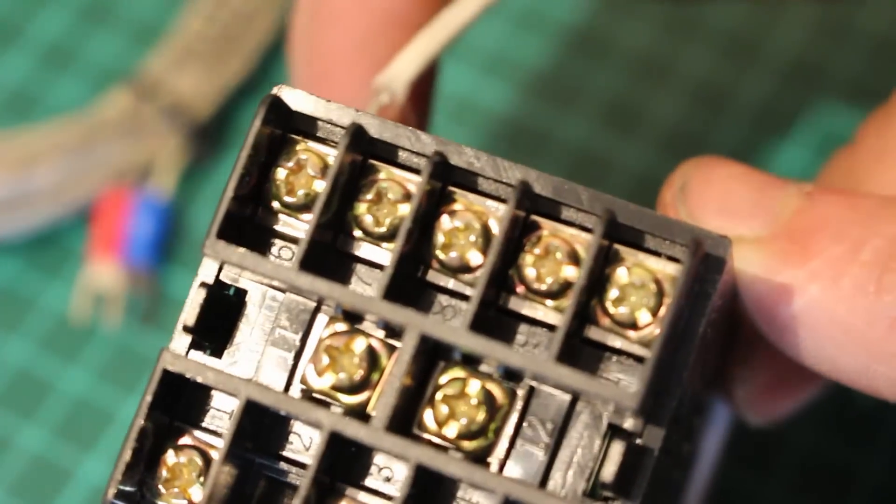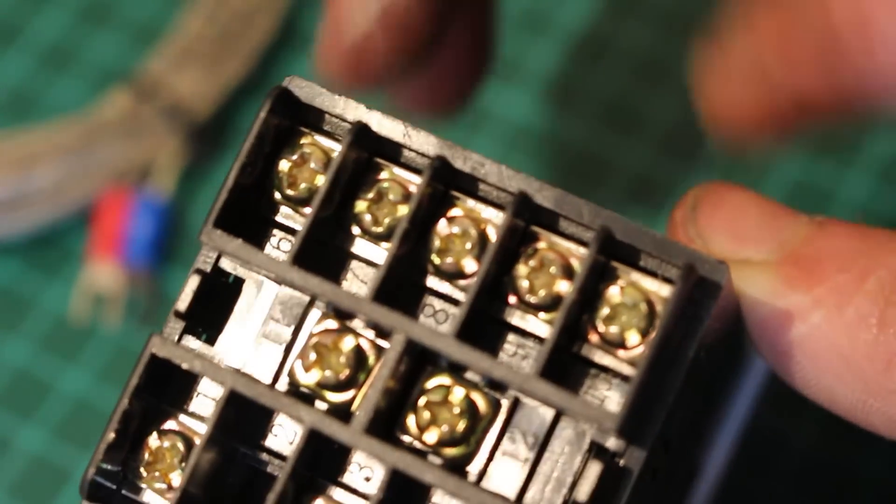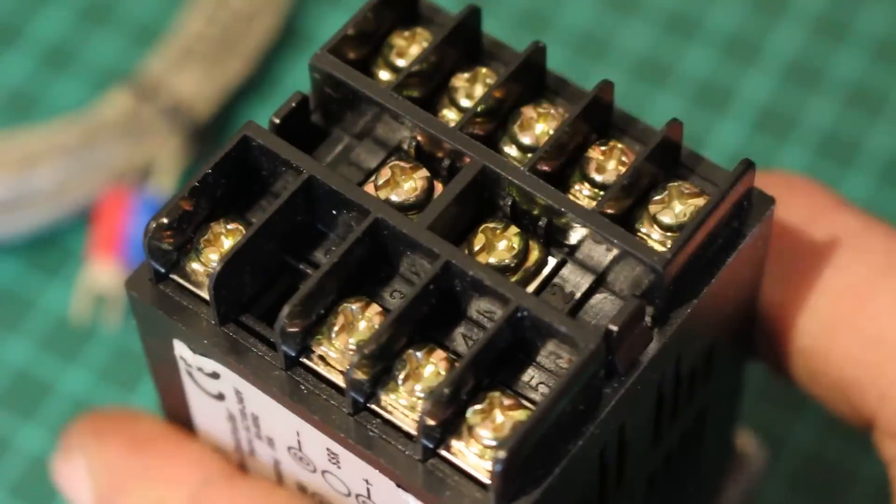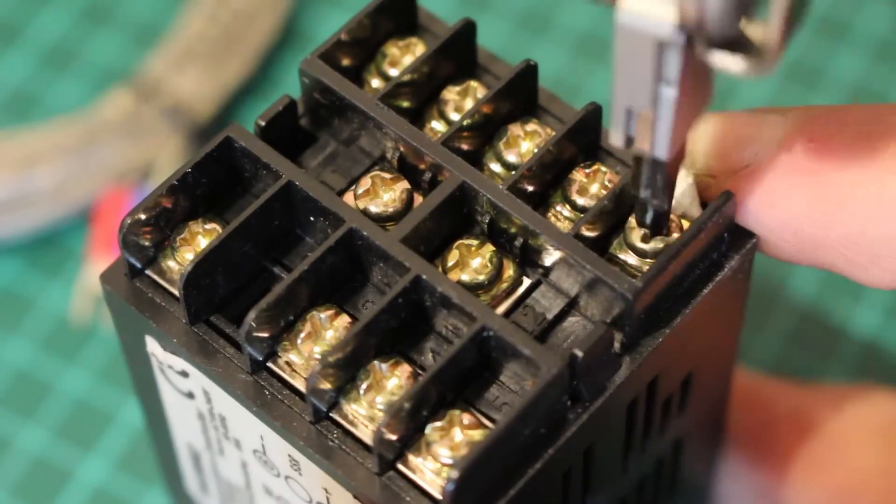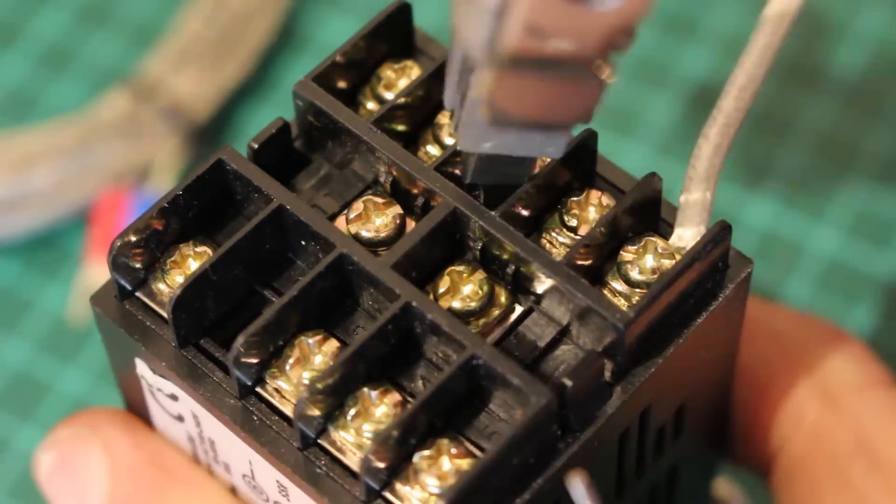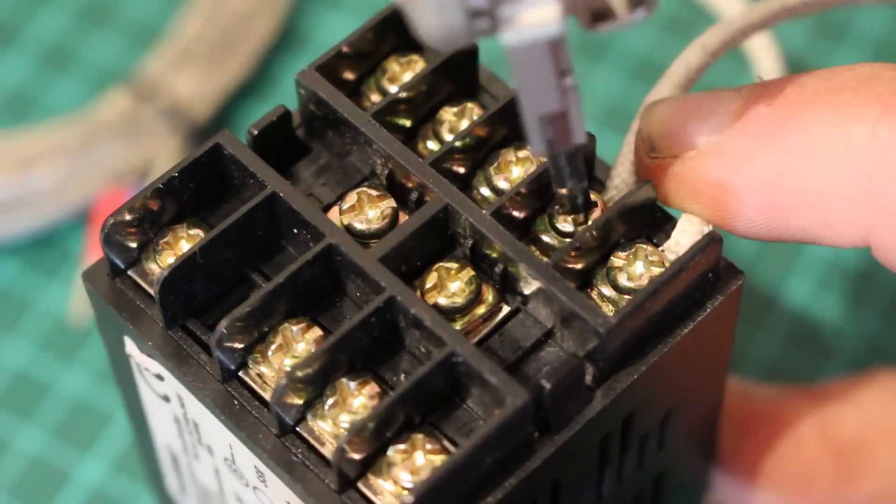Terminal 10 is going to be connected to the neutral wire and terminal 9 is going to be connected to the live wire. Make sure that when you're connecting anything into a terminal block you push it all the way in so there's no bare wire exposed on the outside of the terminal and it connects all the way up to the insulation.